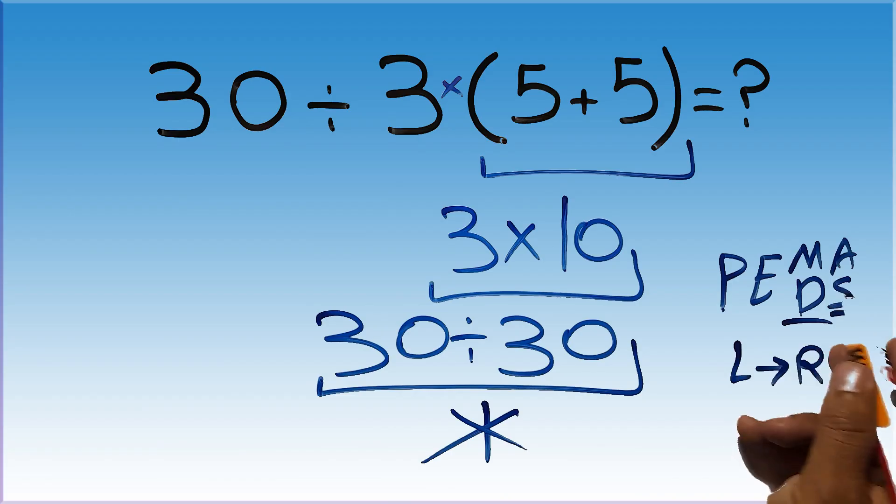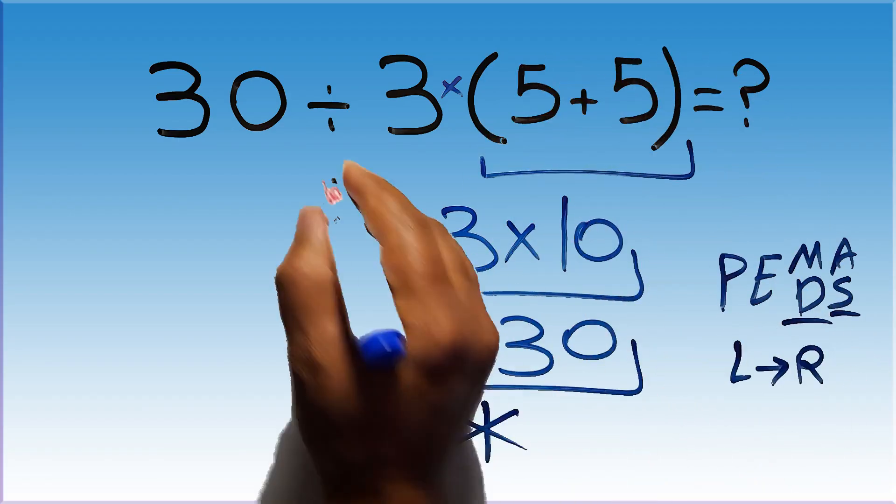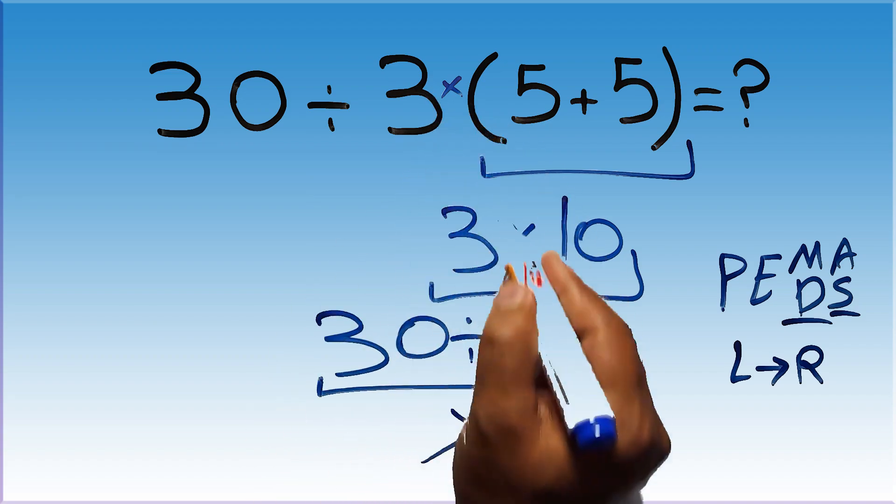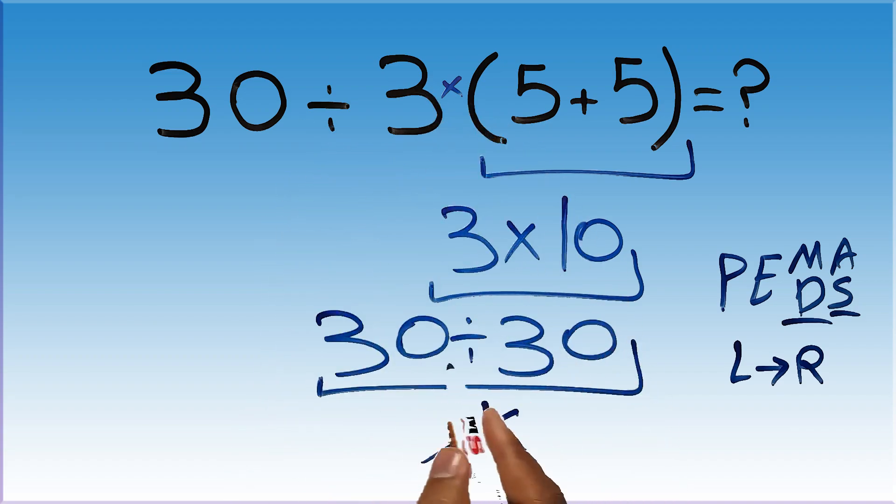Okay, so according to PEMDAS, first we have to do this parentheses, then this division, and finally this multiplication. If we do this multiplication before this division, it is wrong.